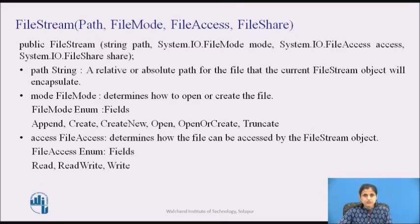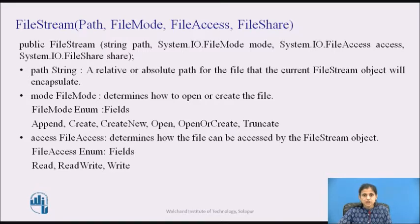The constructor initializes a new instance of the FileStream class with a specified path, creation mode, read or write permission, and sharing permission. The first parameter, path, is a relative or absolute path of the file. The second parameter is mode — it specifies how the operating system should open a file. FileMode is an enum whose values determine how to open or create the file. It has fields: Create, CreateNew, Open, OpenOrCreate, Append and Truncate.